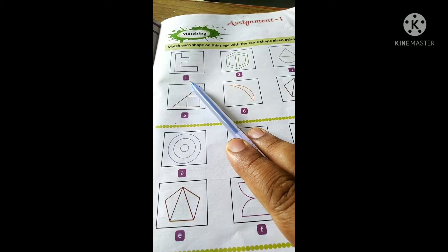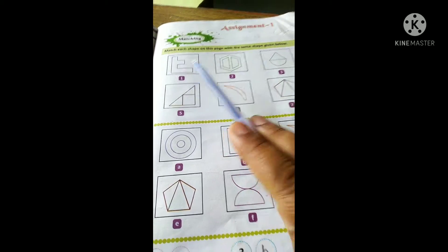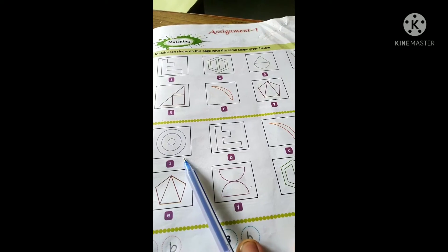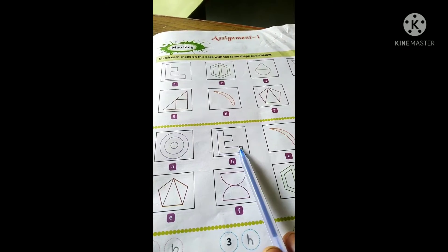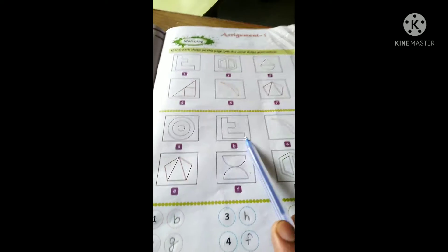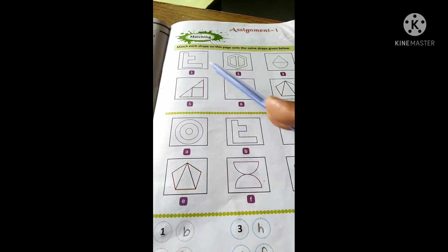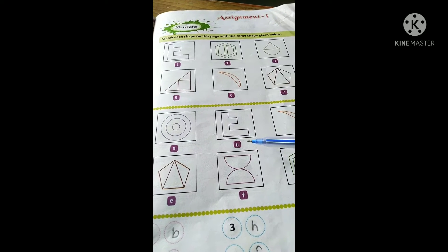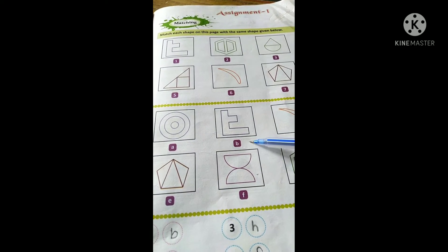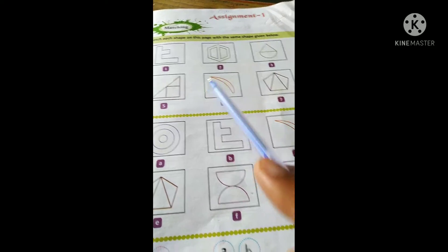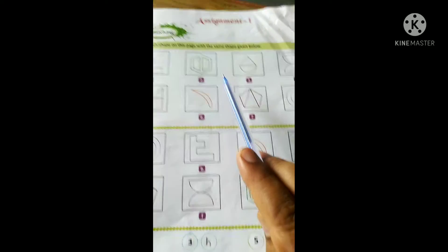This is figure number 1. Let's find out which figure matches. Yes, this is the same. So here we will write B because figure number 1 matches with figure B. Now we will match all the figures.